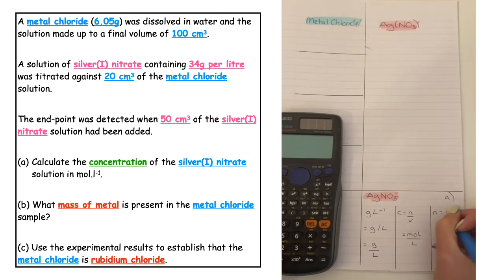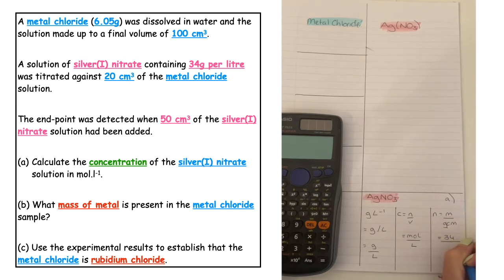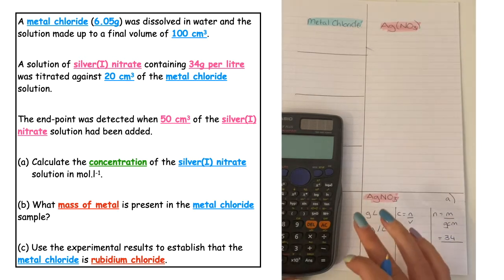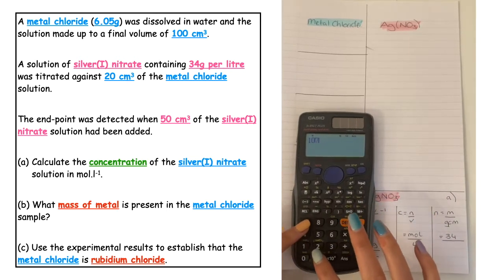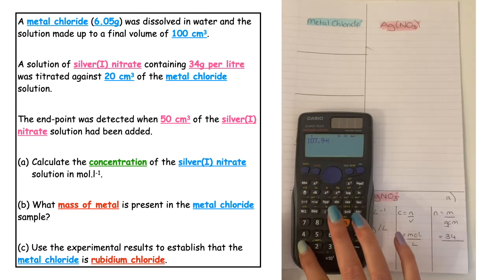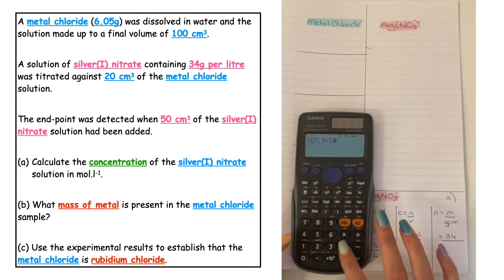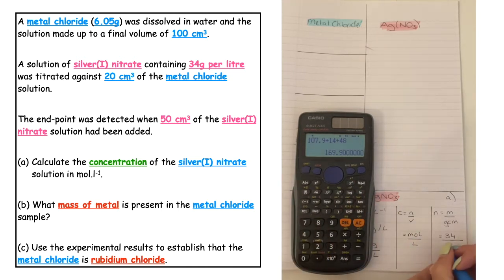n equals m over GFM. The mass we were given in the question was 34 grams. We need to calculate the GFM. So if we pop that into our calculator: silver is 107.9 plus nitrogen which is 14 plus three oxygens which is 48, that gives us a GFM of 169.9.